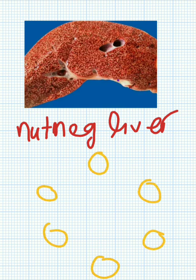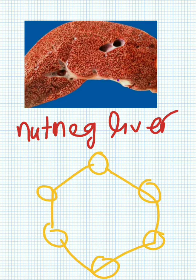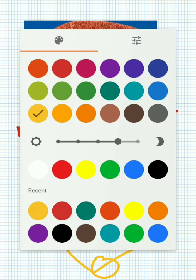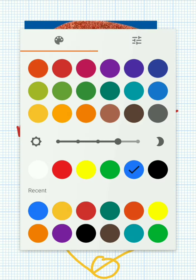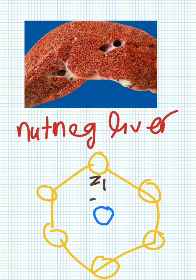This is the hexagonal lobule. You should know that there is a pericentral region, here is the central vein. There are three zones: Z1, Z2, and Z3. This is periportal and this is pericentral.